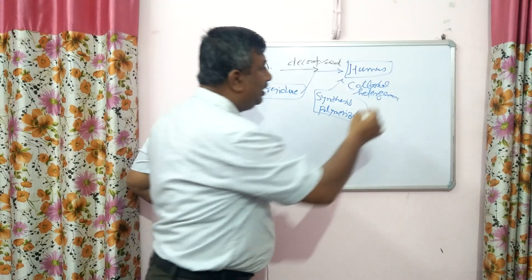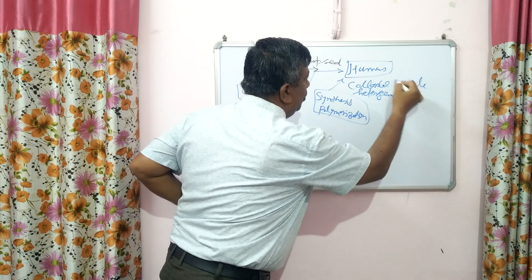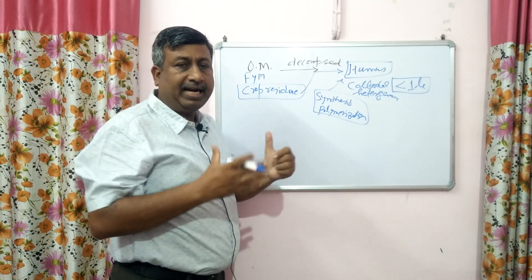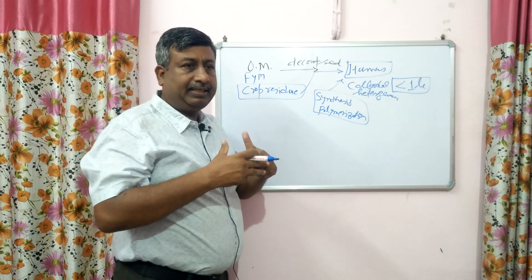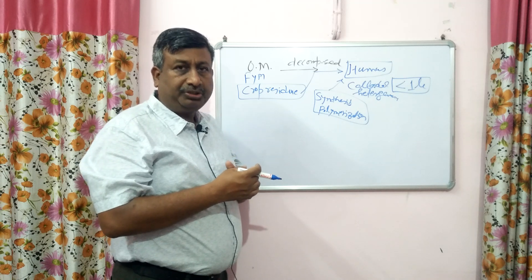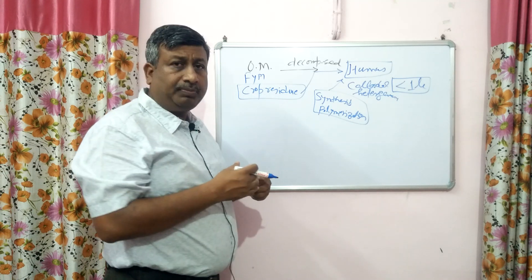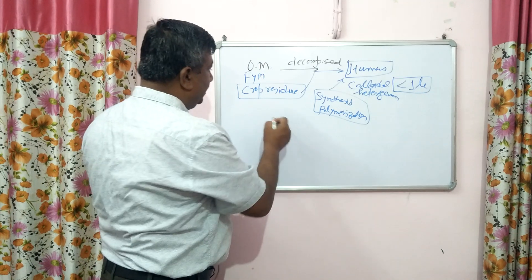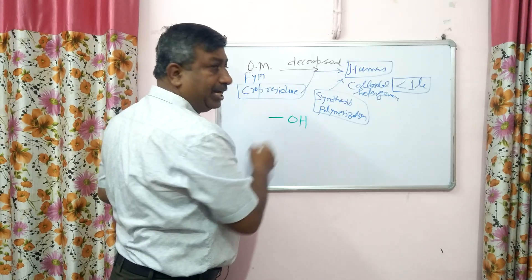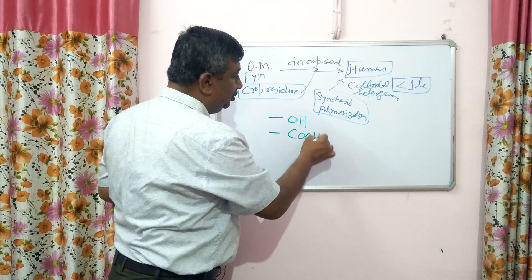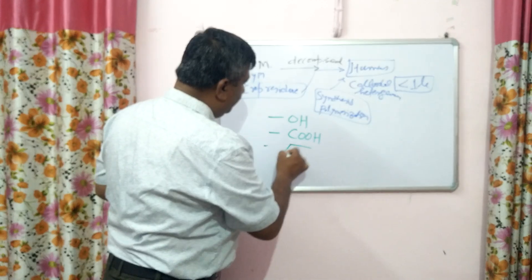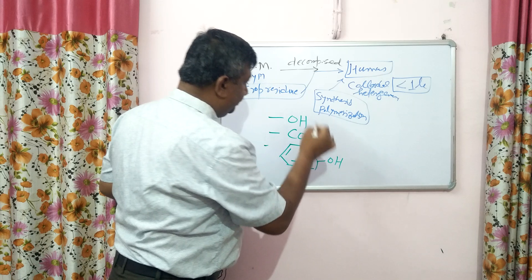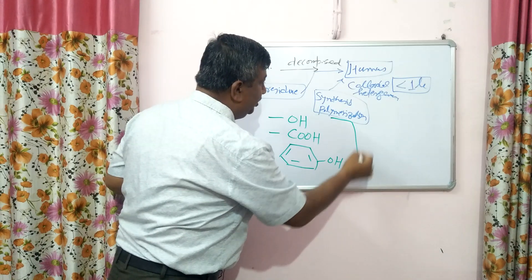Humus is colloidal, meaning its particle size is less than one micron, and because of this colloidal nature, its surface area is very high. That is why it has a very high capacity to absorb moisture. Similarly, this humus contains several organic acids. It contains the carboxylic group, OH group, and these carry a negative charge.